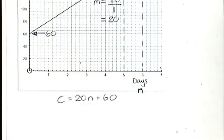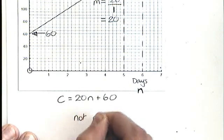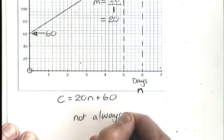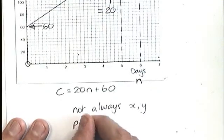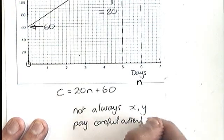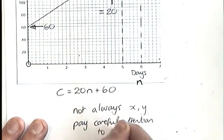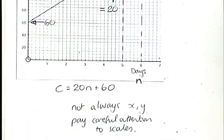So key things to remember there. It's not always x and y. You need to be flexible and you need to use different letters if necessary. And you need to pay careful attention to scales. You must read the numbers from the scales and not from the number of squares.